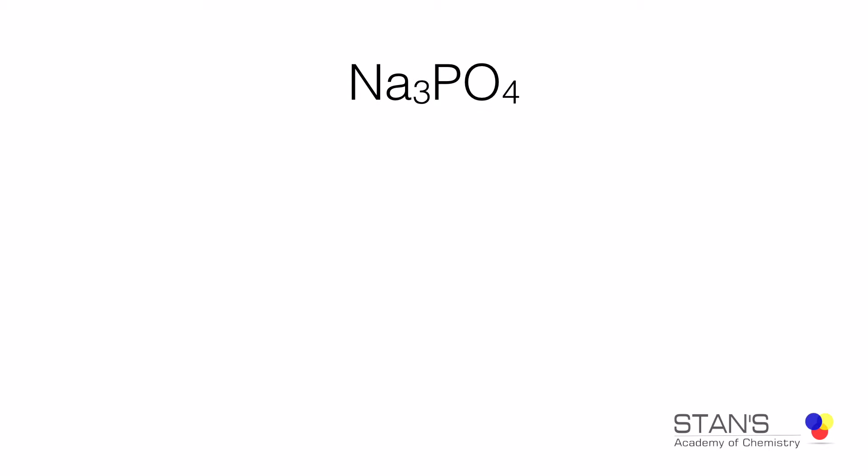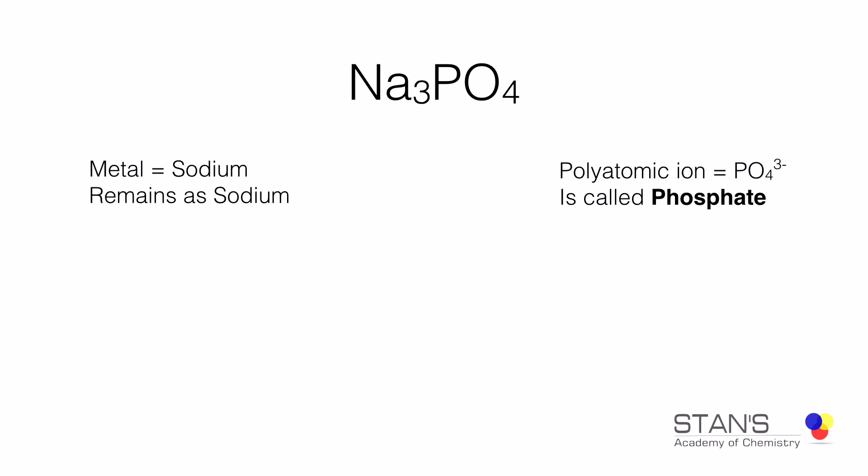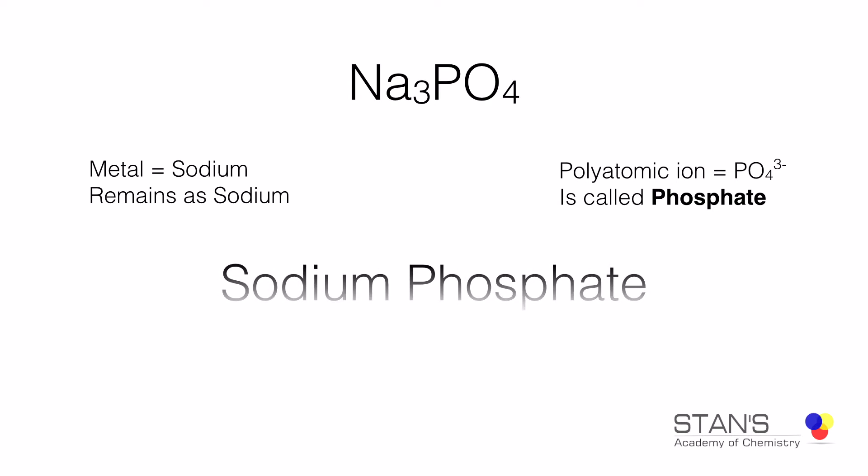In the third example, we will see a compound formed between sodium and a polyatomic ion, phosphate. The metal is sodium — there is no change in the name of sodium. The polyatomic ion is phosphate and there is no change in the name; it does not end in IDE, it is simply called phosphate. So the name of the compound becomes sodium phosphate.